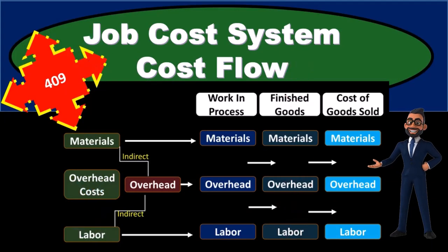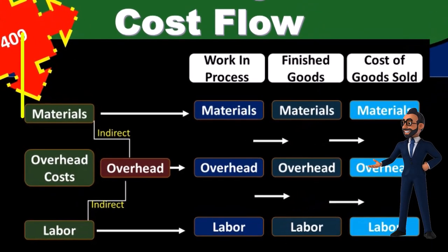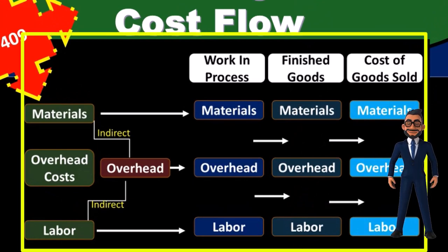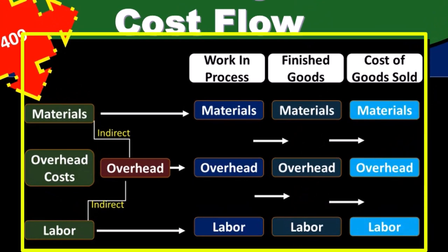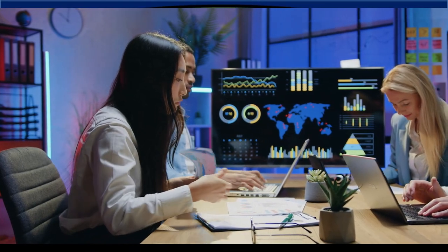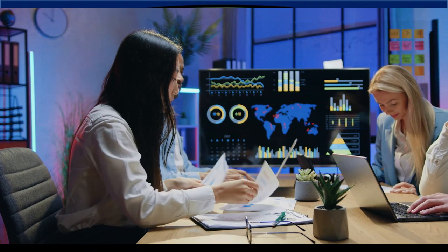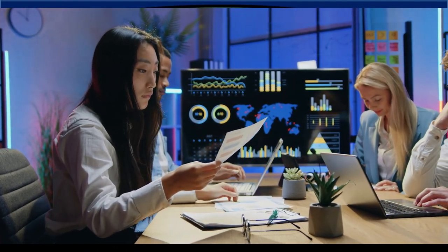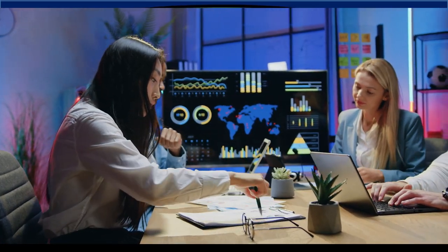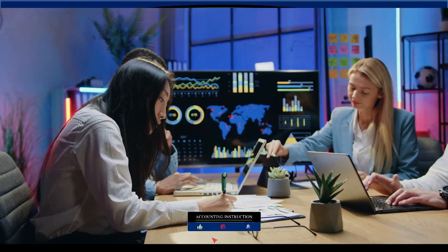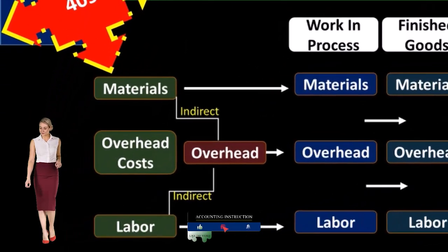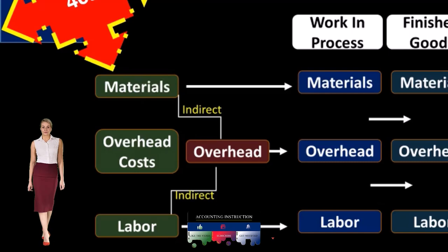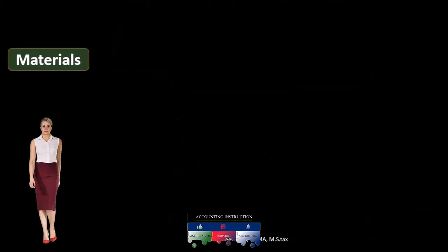We'll get an idea of where we're going, then look at the cost flow as we go through a comprehensive problem. When we go through a comprehensive problem, we often start to look at very specific components of a fairly long problem. So we want to keep an idea in our heads of the overall cost flow, so we know how each component fits into the big picture. That gives us more context and motivation to learn the particular step we are looking at.